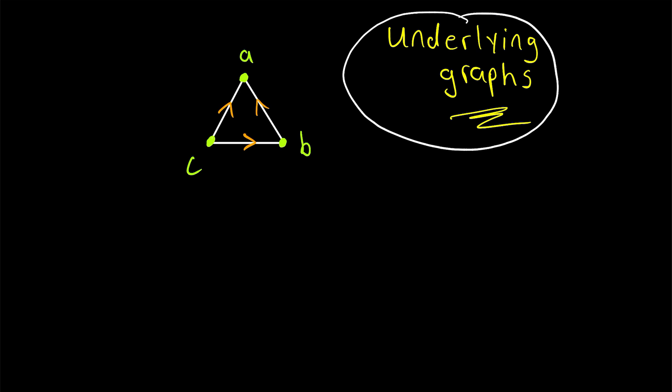Then, the underlying graph of this directed graph is really simple. Just get rid of the direction on the edges, and so what remains is an undirected graph with the same vertices and undirected edges wherever there previously were directed edges. This is the underlying graph of the directed graph. So that is the simplest way to think about underlying graphs. The underlying graph of a directed graph is created by just getting rid of the direction on the edges.